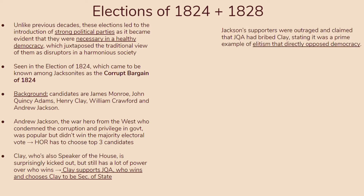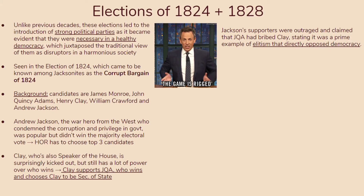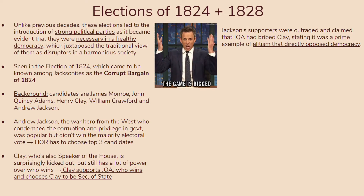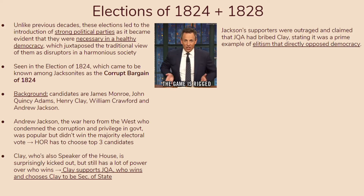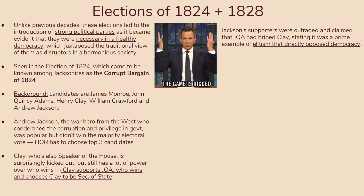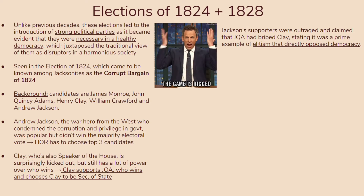Jackson's supporters were outraged, claiming that JQA bribed Clay, and stated it was a prime example of elitism that directly opposed democracy. Jacksonites were saying it was a situation where both sides win — Clay was trying to get JQA into office to further his own ideals and become Secretary of State, since in previous administrations those who served as Secretary of State tended to become presidents in future elections. So Jacksonites were super upset about this.